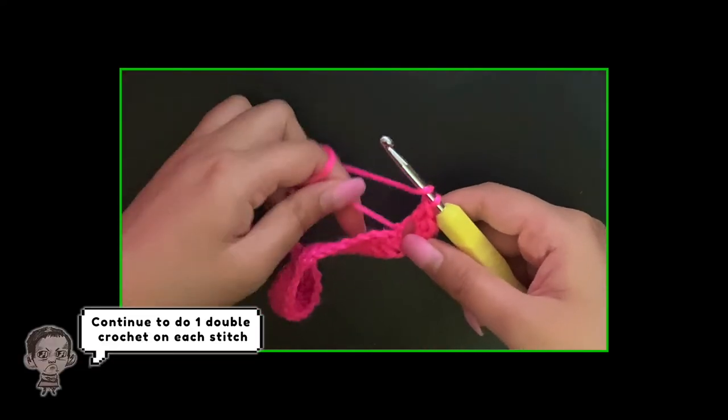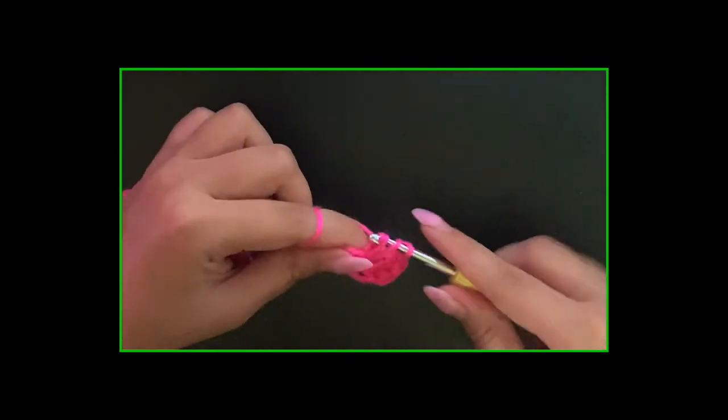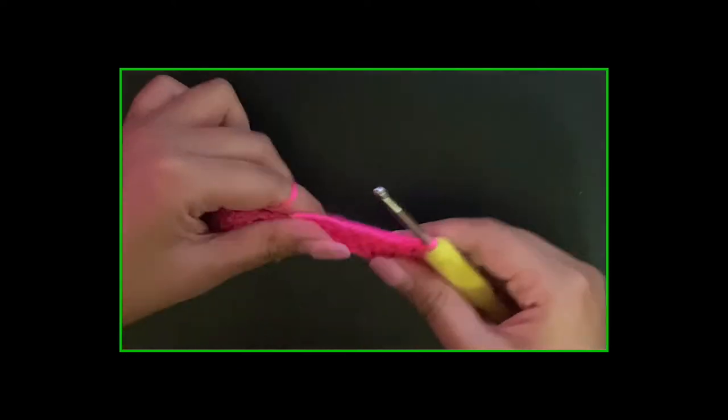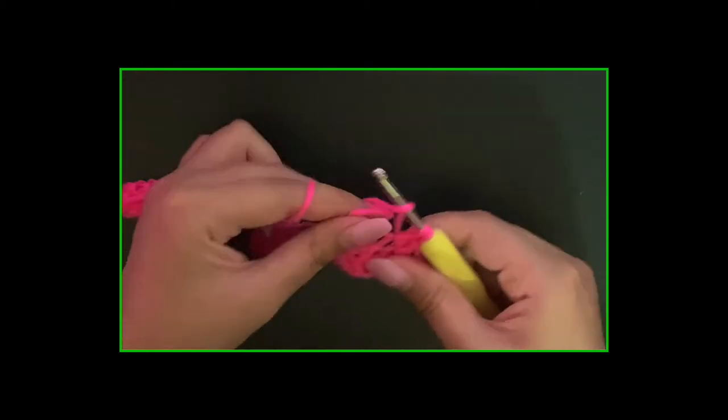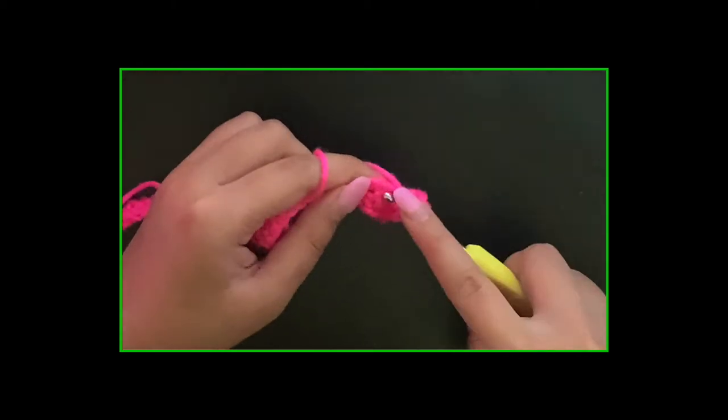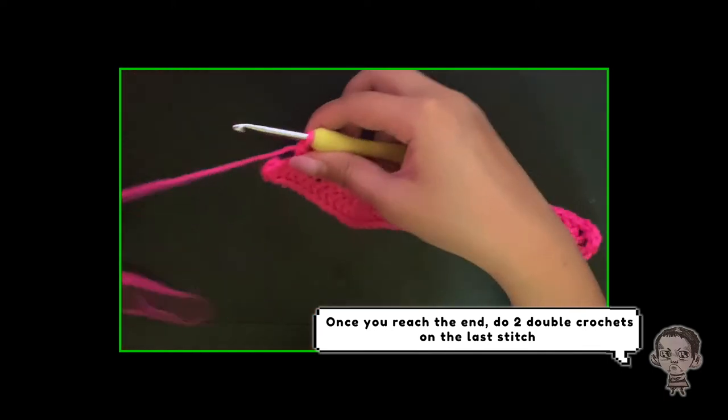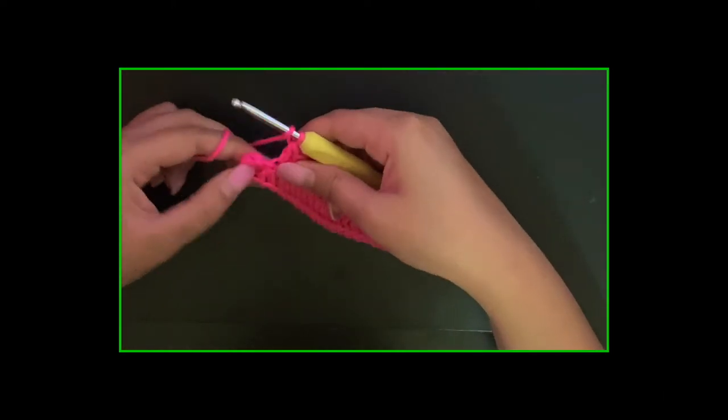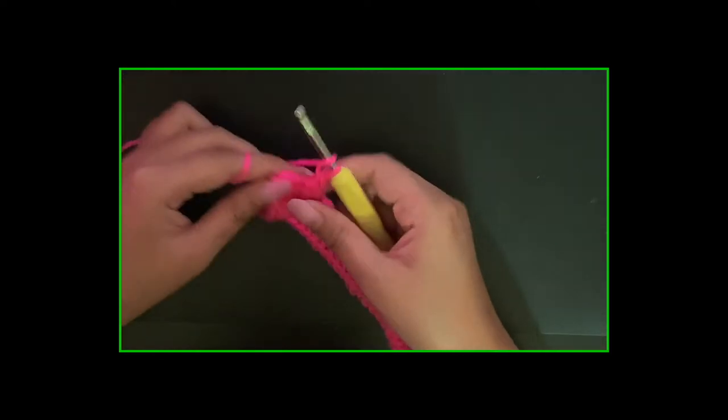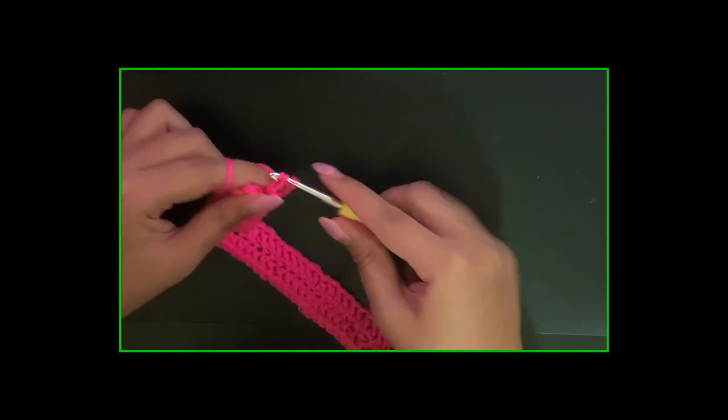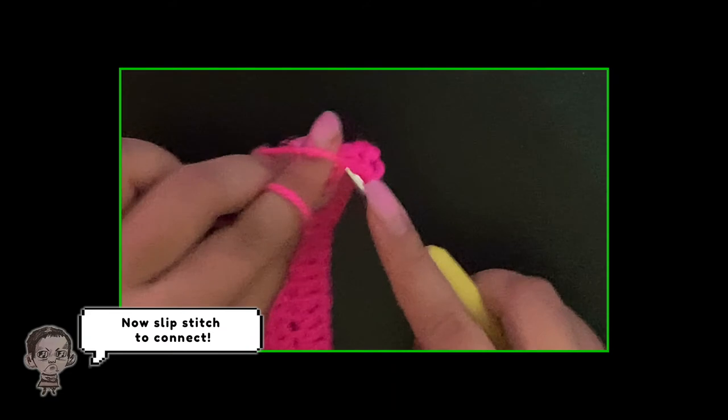Continue to do 1 double crochet on each stitch. Once you reach the end, do 2 double crochet on the last stitch. Now slip stitch to connect.